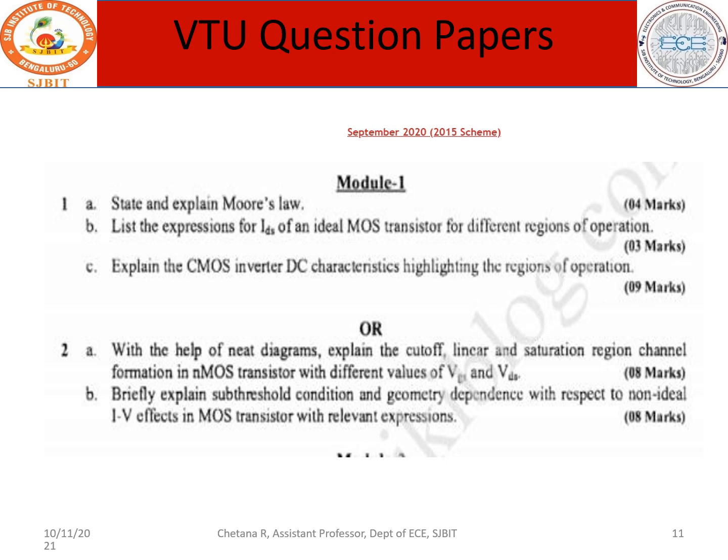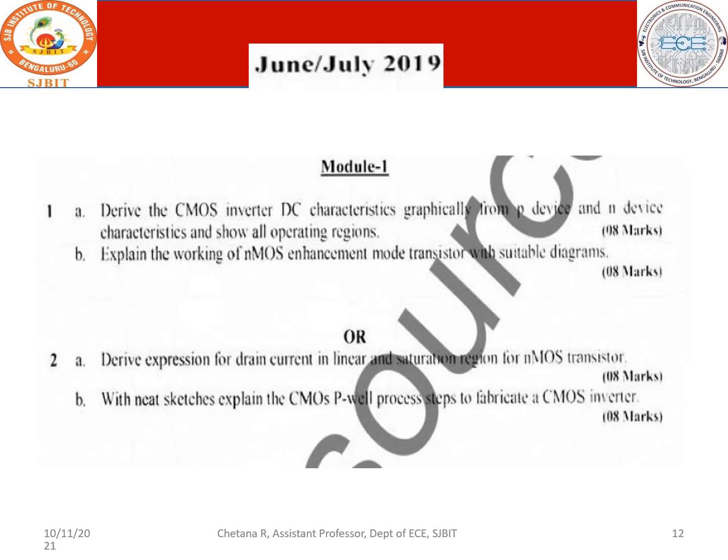In the subthreshold condition where VIN is still less than VTN, you can discuss leakage current, hot electron effects, and punch-through. Many effects arise because of current flowing in the substrate. Also, derive the CMOS DC transfer characteristics and show all the operating regions for 8 marks.